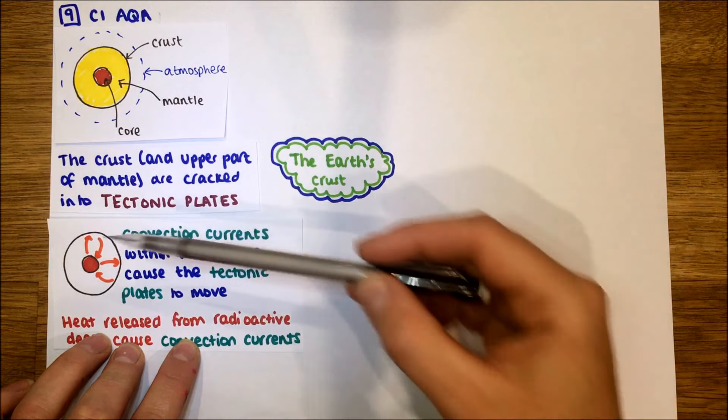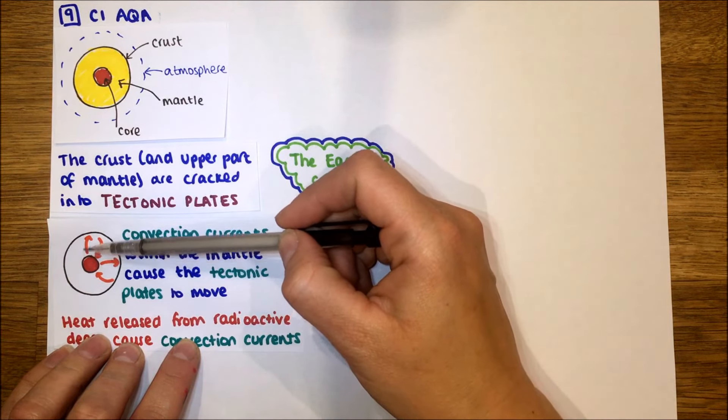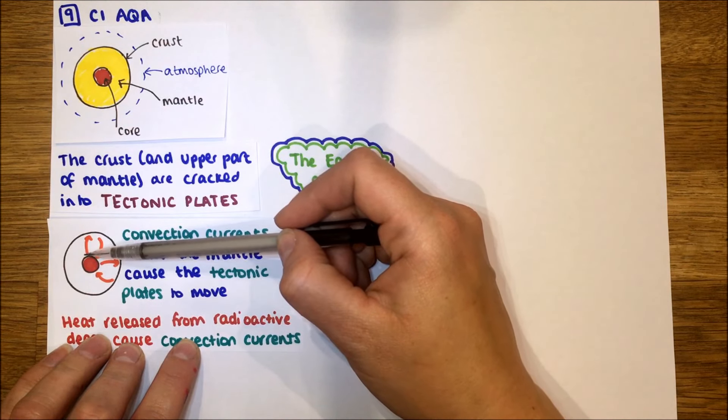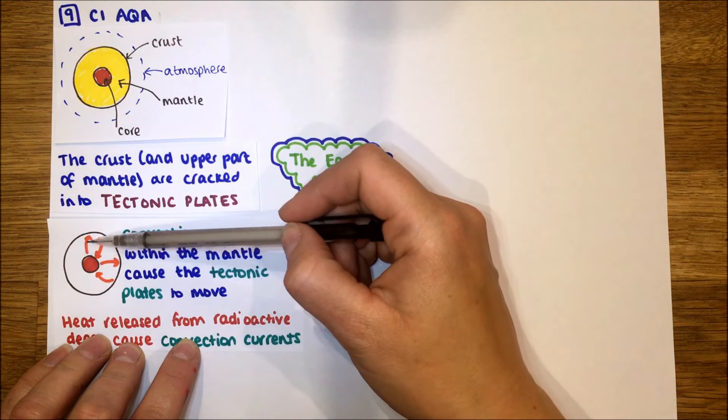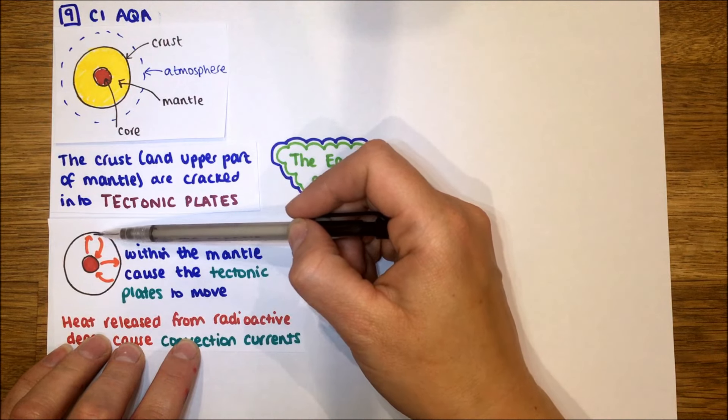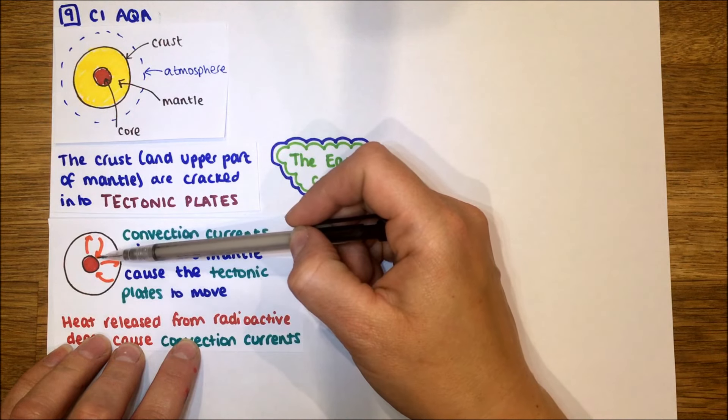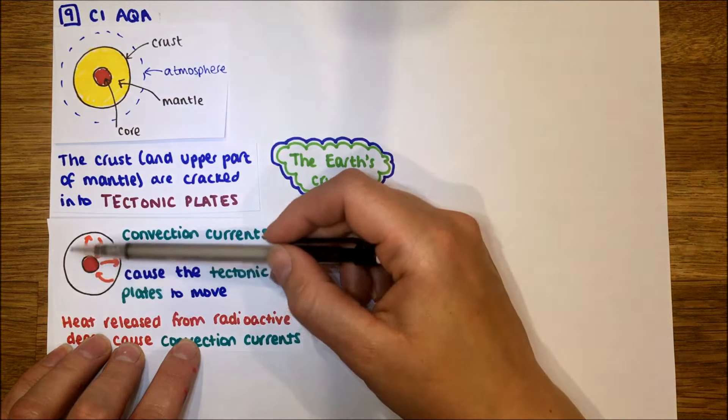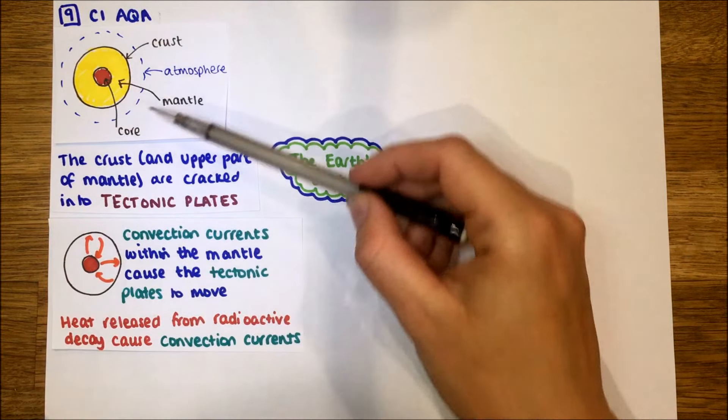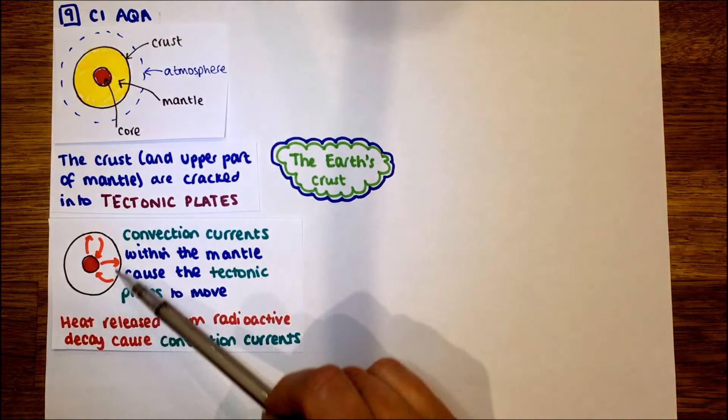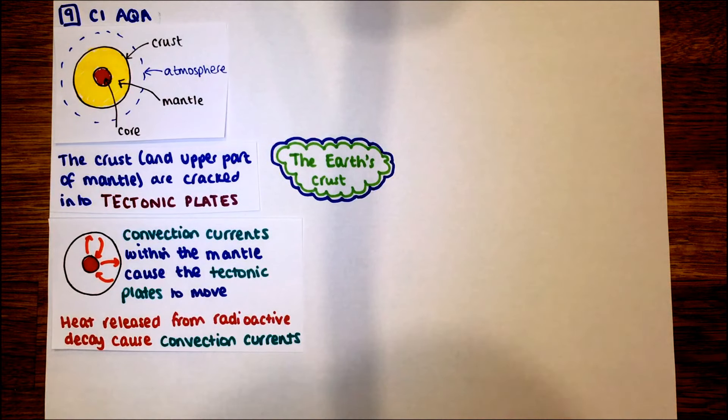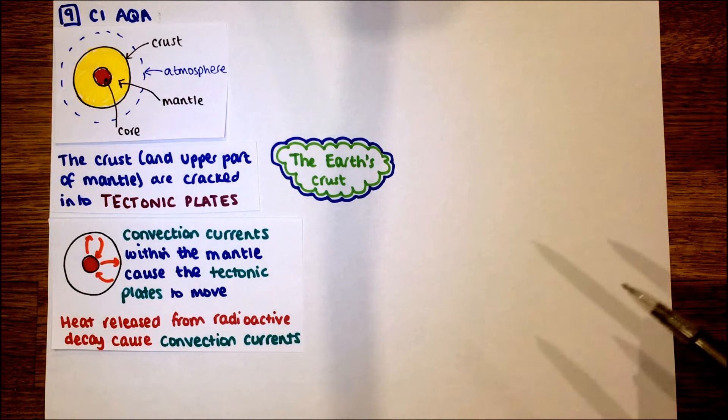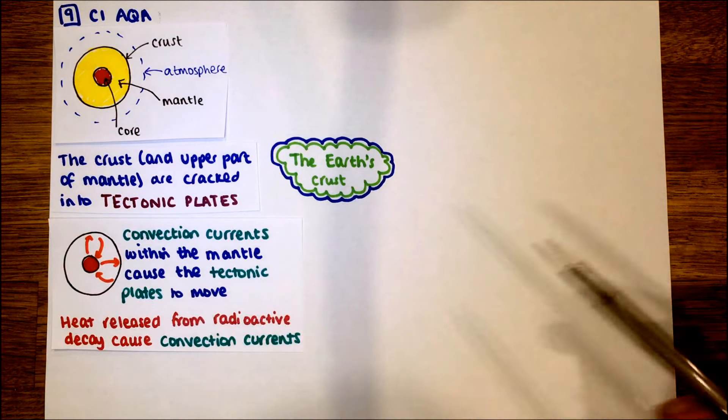These particles close to the core get really hot and they move further apart, become less dense and rise. When they come to the surface, they cool and they sink back down. That repeats itself over and over again. That movement within the magma, within that mantle moves that surface, those tectonic plates. So the heat released from radioactivity decay inside that core cause convection currents, which make the tectonic plates move.